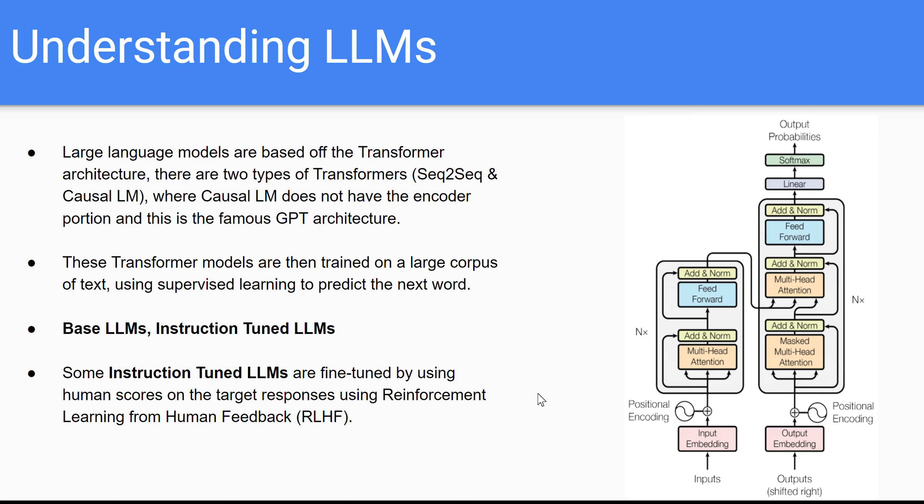And then you use reinforcement learning to train the model to be able to produce those responses that got the higher reward and to not produce those responses that got a bad reward. In reinforcement learning, the model is going to learn how to generate the responses that get the highest reward.